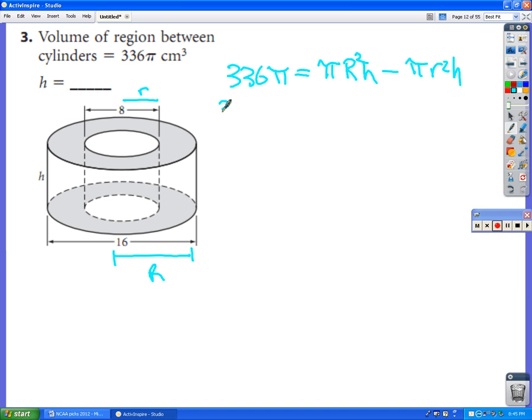Okay, so that is a little bit tricky. But now I can plug in some numbers that I know. So 336π equals, I know the radius of the big outer cylinder is 8. And 8 squared is 64. So that would be 64πh. Minus, I know the radius of the little one is going to be 4. And 4 squared is 16. So that would be 16πh. These actually turn out to be like terms because they both are πh's. So 336π equals 64πh minus 16πh would be 48πh.